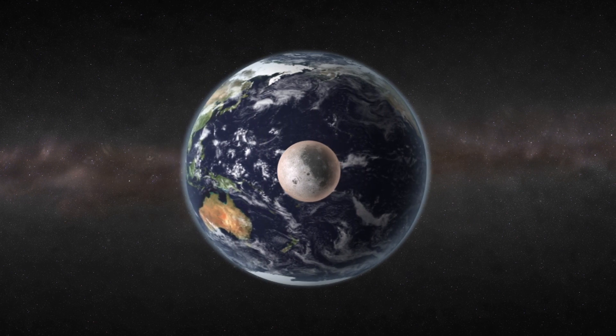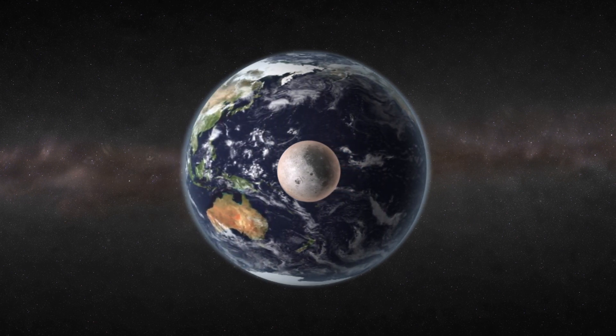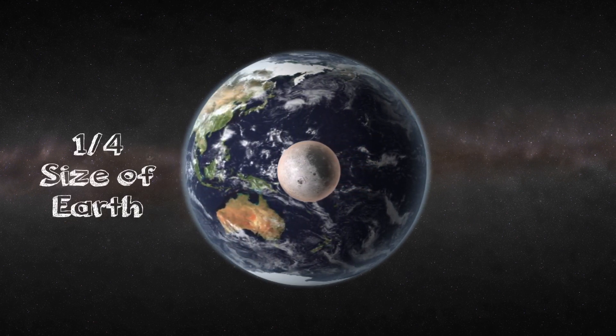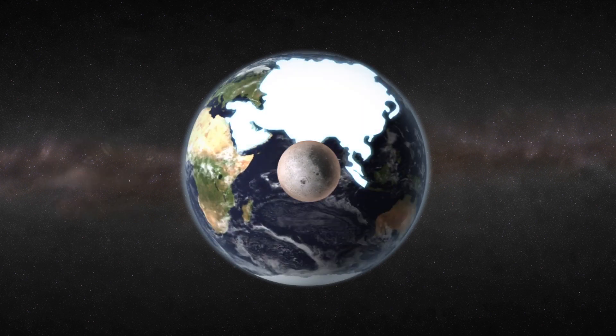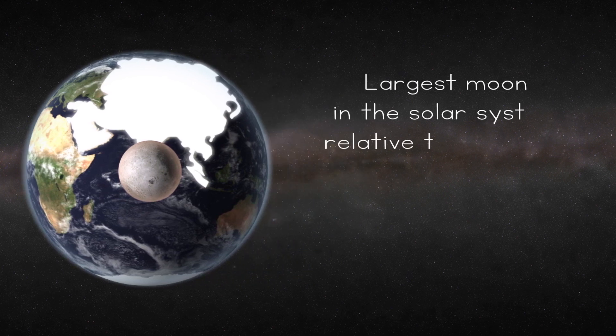The moon is significantly smaller than our Earth. In fact, it's only about one quarter the size of Earth and the moon's total surface area is less than the total surface area of Asia. Even though our moon is small, it's actually the largest moon in the solar system relative to the planet it revolves around.